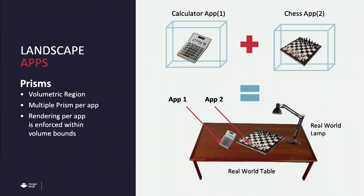What we did is take two apps, put some protocols around them. As an app developer, you have a volumetric space around you within which your app can live. We take two apps, put them together with protocols, and the management — as in the placement of it — we use a system called Universe. It is the equivalent of a desktop manager, but for mixed reality.